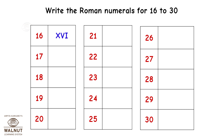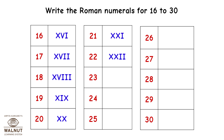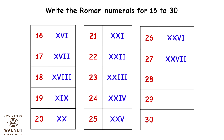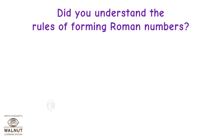Write the Roman numerals for 16 to 30: 16 is XVI, 17 is XVII, 18 is XVIII, 19 is XIX, 20 is XX, 21 is XXI, 22 is XXII, 23 is XXIII, 24 is XXIV, 25 is XXV, 26 is XXVI, 27 is XXVII, 28 is XXVIII, 29 is XXIX, 30 is XXX. Did you understand the rules of forming Roman numbers?